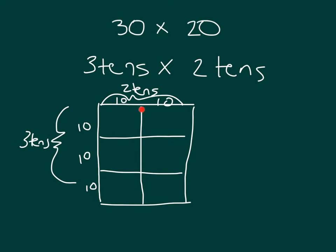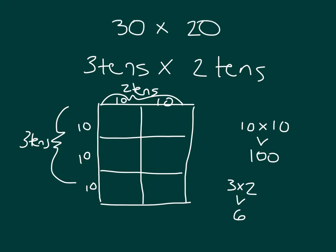Each of these squares — the area of each of these squares is 10 by 10. Area is equal to length times width, and 10 times 10 is 100. How many squares are there? There's six. Three times two does give us six. There's six squares of 100 each. Each of the squares is 10 by 10, or 100.